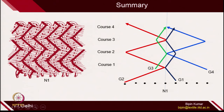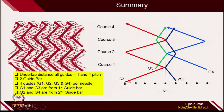Similarly, if you go for a more complicated structure where 2 guide bars are used and each needle interacts with 4 guides, the underlap distance of all guides is either 1 pitch or 4 pitch. Since the underlap distance is different, we need 2 guide bars. G1 and G3 — the green and purple-blue — have the same movement, so they can be attached to the same guide bar. The red and dark blue have the same movement, so they are attached to the different guide bar.